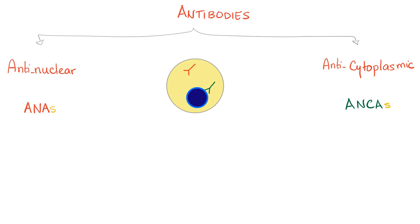Pay attention, because I said anti-nuclear antibodies — with an S, because it's plural. There is a huge difference between ANA and ANAs. By the same token, there is a difference between tetracyclines, which is a class of medication, and tetracycline, which is just an individual drug.